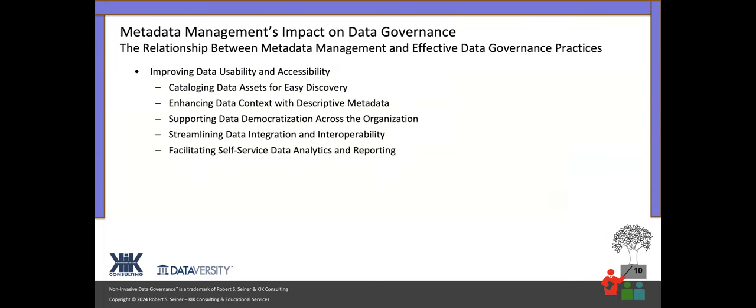Improving data usability: organizations are trying to increase people's confidence in the data. Using metadata to provide context — where data came from, the quality checks being done, who's responsible — all of that is the metadata that makes data more usable. There are already systems in most organizations managing accessibility and who has access to what. The problem is that metadata is often buried within security tools, so organizations may look to leverage that metadata to help make their data governance program more effective.